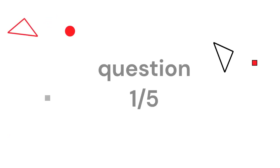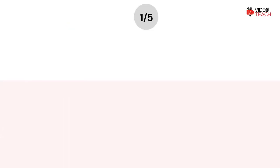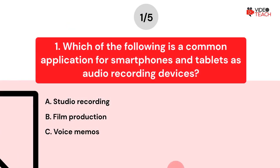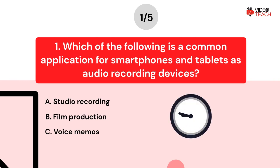Question number one. Which of the following is a common application for smartphones and tablets as audio recording devices? Option A: Studio recording. Option B: Film production. Option C: Voice memos. Now you have about 15 seconds to think about your answer.